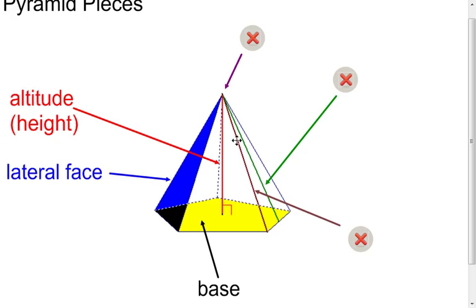This edge right here that looks like it's kind of brown in color, being it's the intersection of the two of the lateral faces, that's going to be a lateral edge.